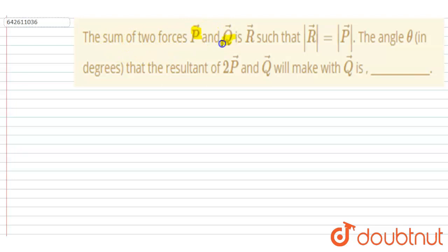Hello everyone. Sum of two vectors P and Q is R vector such that magnitude of R vector is equal to magnitude of the P vector.